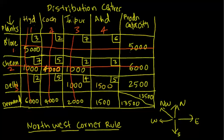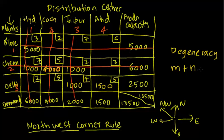This gives us the initial basic feasible solution, from which we reach the optimal solution using either the Modified Distribution method or the Stepping Stone method. After completing any initial basic feasible solution, you must check for degeneracy, which is given by m + n - 1, where m is the number of plants (three) and n is the number of distribution centers (four). So 3 + 4 - 1 = 6. Check whether we have six basic variables.